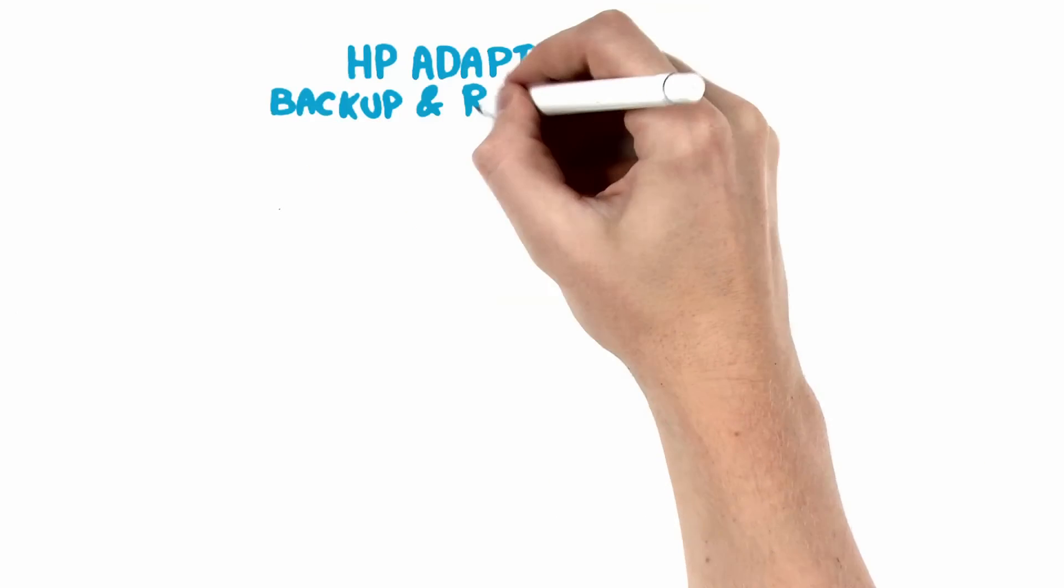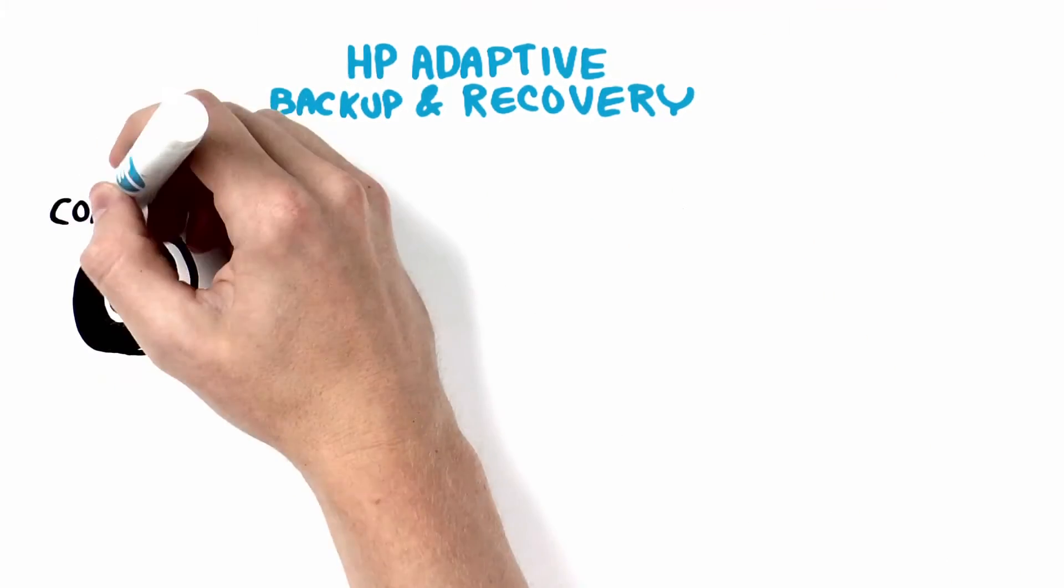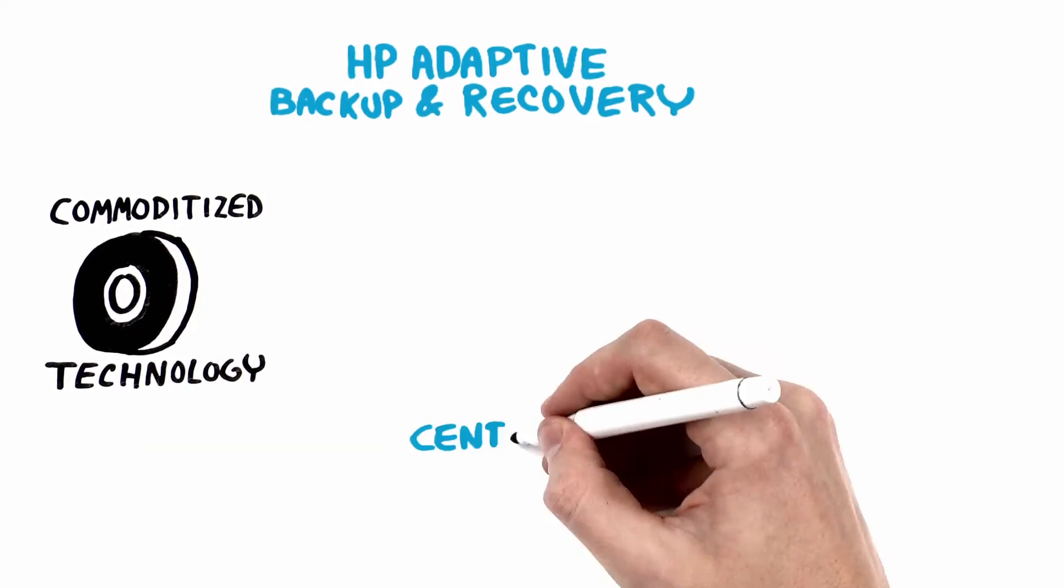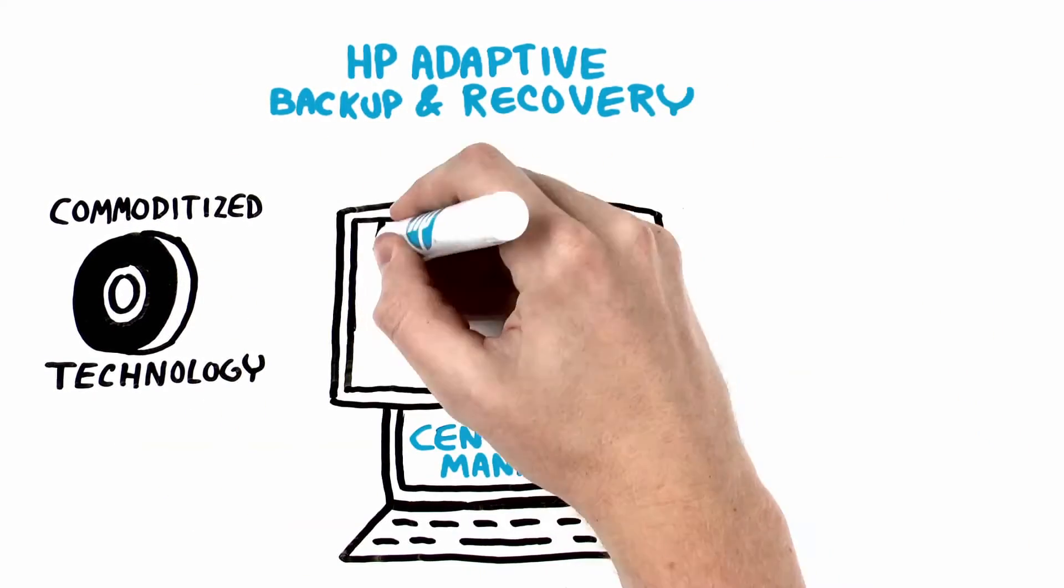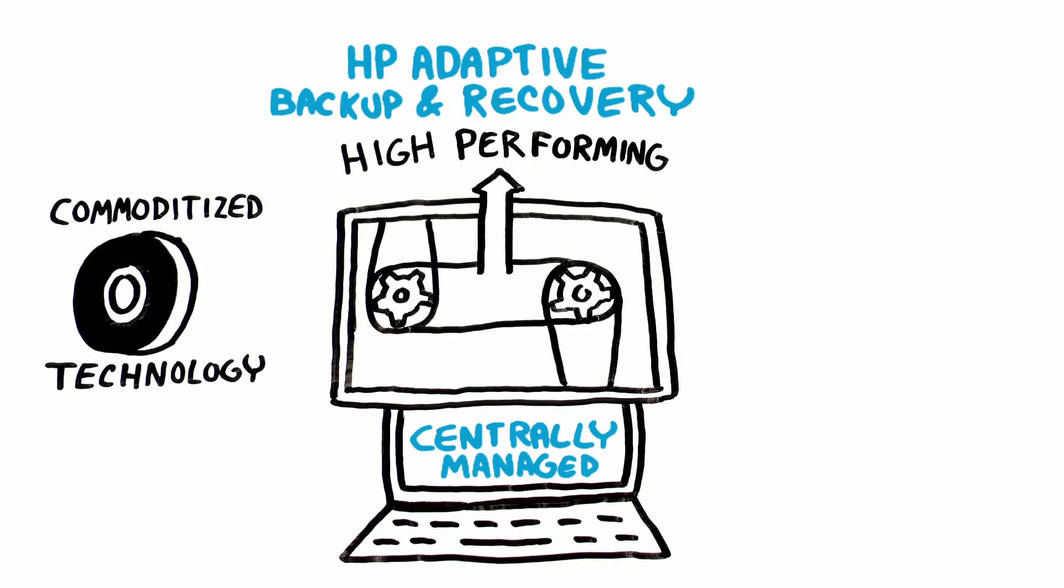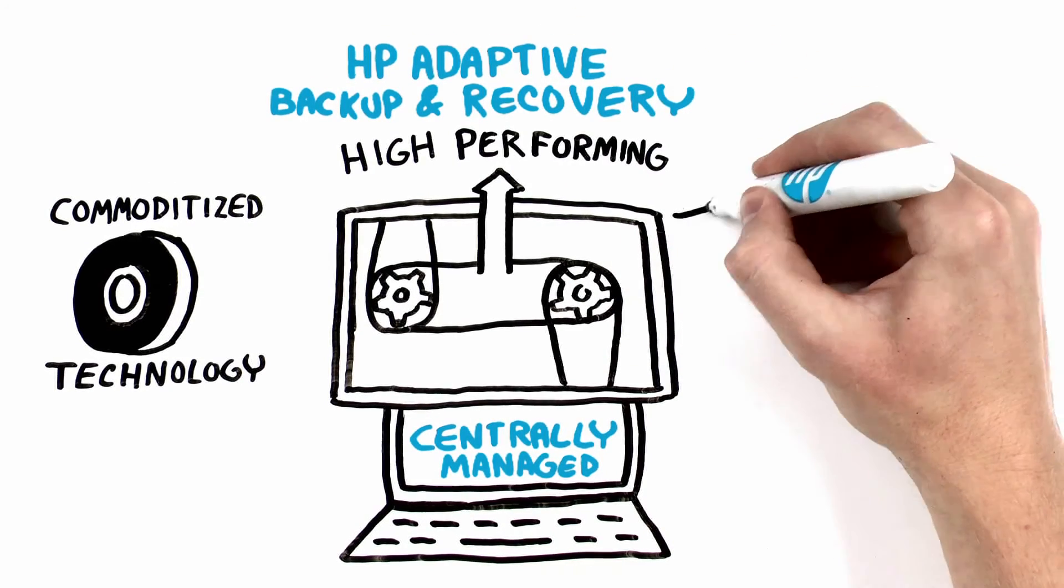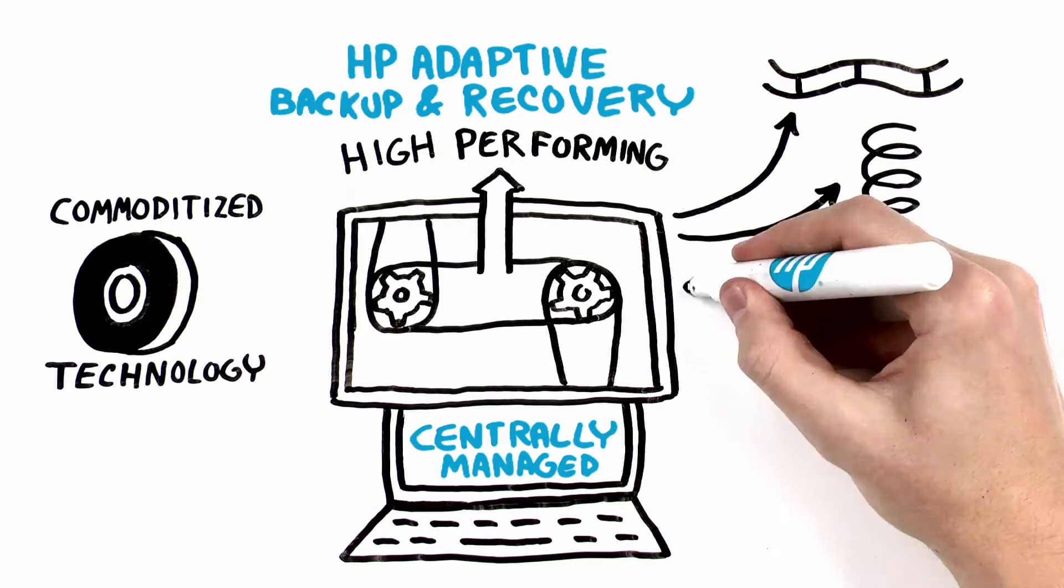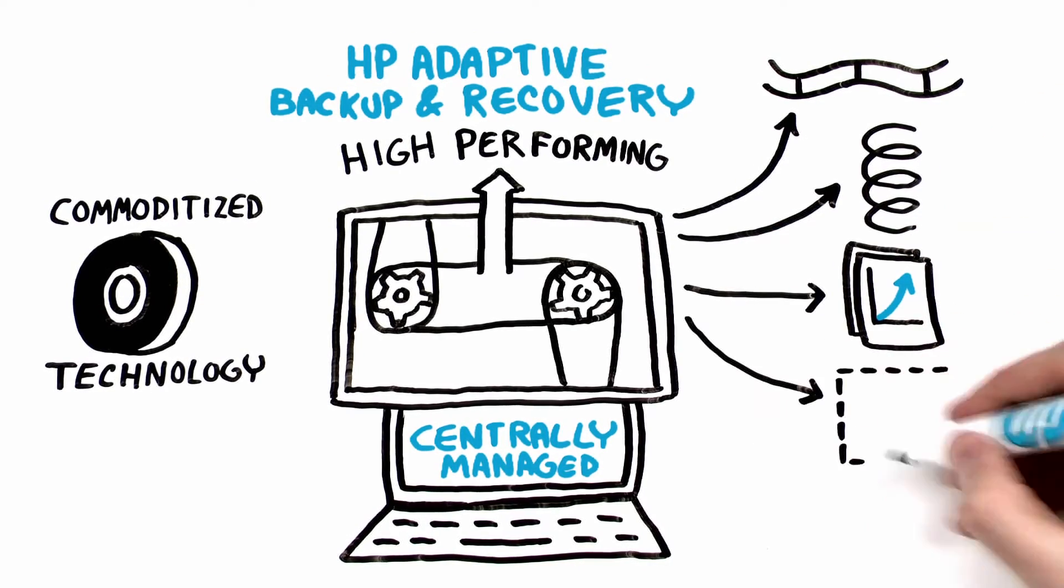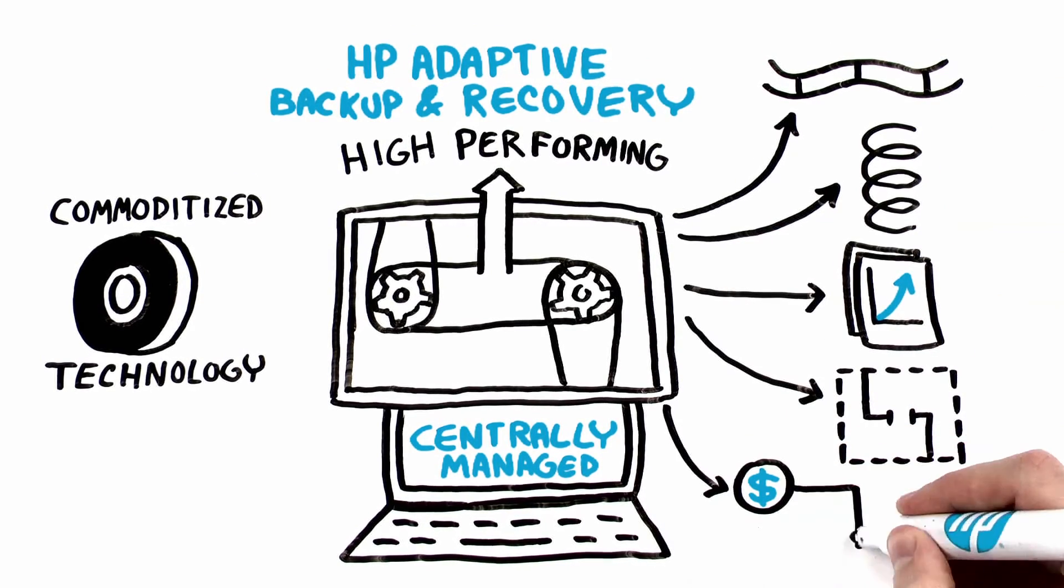HP Adaptive Backup and Recovery transforms data backup from a commoditized technology into a centrally managed, highly automated, and high-performing backup environment. This greatly improves business continuity and resiliency, increased resource and infrastructure efficiencies, and lower storage costs.